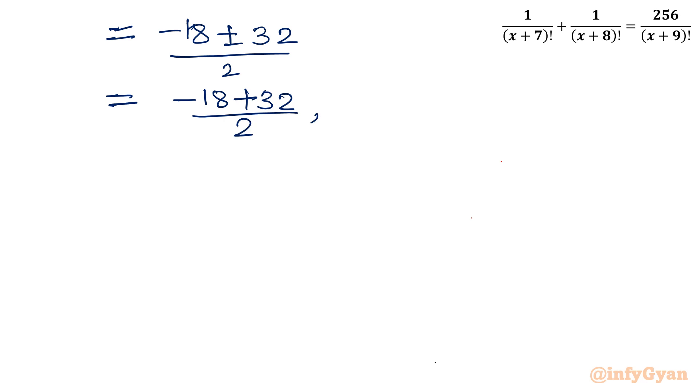And if I will consider minus sign in between, then it would be minus 18 minus 32 over 2. So this value will be 32 minus 18, so 14 over 2, 7 and minus 50 over 2, minus 25.